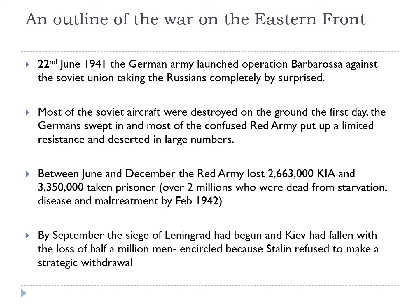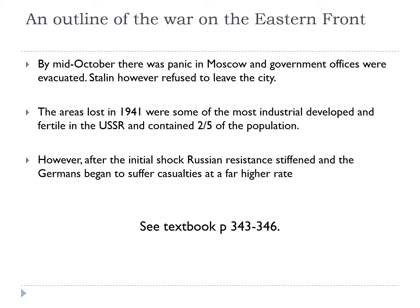Over two million more died from starvation, disease, and maltreatment by February 1942, resulting in mass casualties. By September the siege of Leningrad had begun, and Kiev had fallen with the loss of half a million men — they were encircled because Stalin refused to make a strategic withdrawal when advised to, and his advisors eventually had to physically remove him. By October there was panic in Moscow, government offices were evacuated, yet Stalin refused to leave. The areas lost in 1941 were some of the most industrially developed and fertile in the USSR, containing two-fifths of the population. However, after this initial shock, Russian resistance stiffened and the Germans began to suffer casualties at a far higher rate.